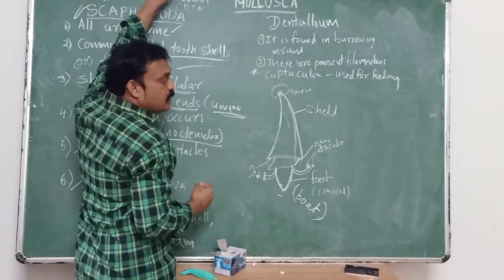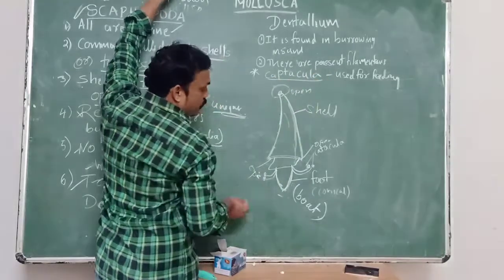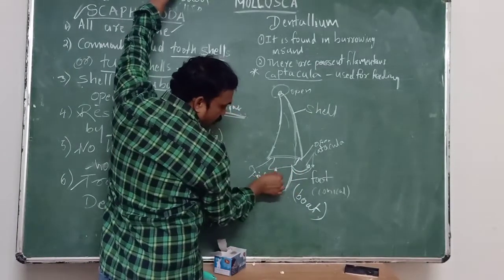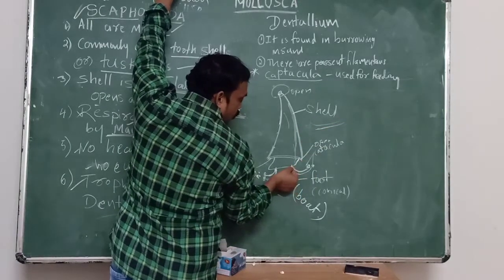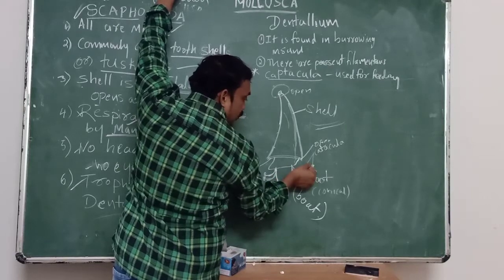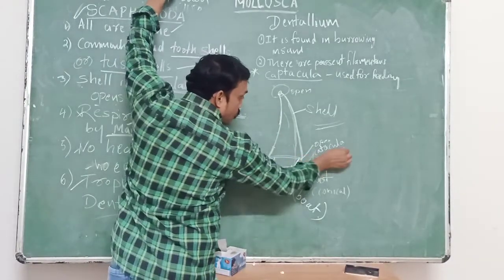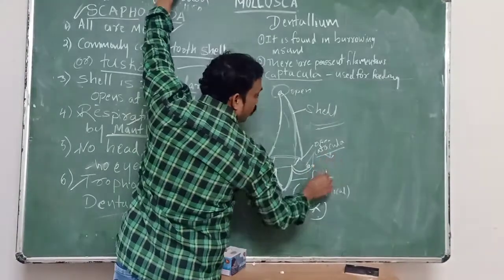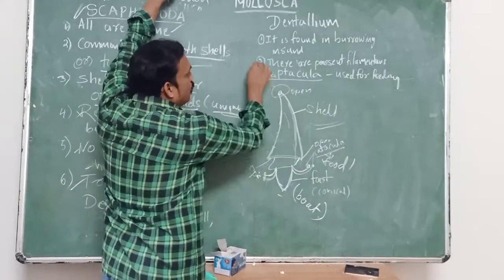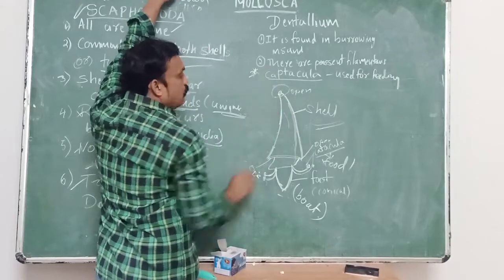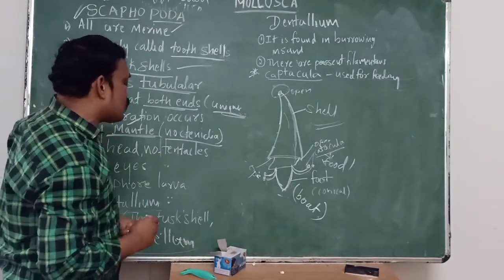Tentacles are absent in Scaphopoda, but filamentous structures called captacula are present. These thread-like captacula are observed in the posterior region and replace the tentacles. The captacula are useful for capturing food and feeding. This is a very important characteristic of Dentalium.